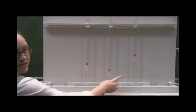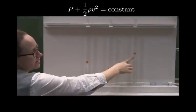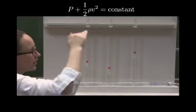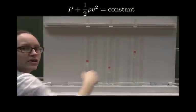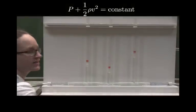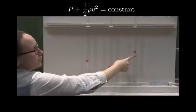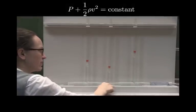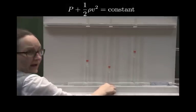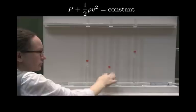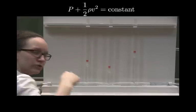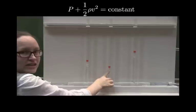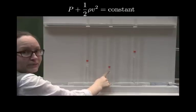You can see at this end the little bottle rises to quite a high height, indicating that we've got more pressure at this end. Then when we go through the narrow part, this bottle rises to a lower height, showing that we've got a lower pressure in the middle.